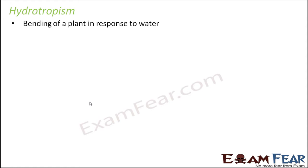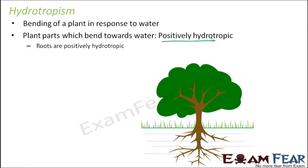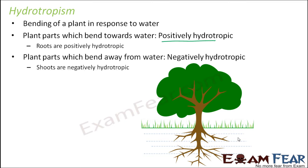Third is hydrotropism — bending of a plant in response to water. Plant parts that bend towards water are positively hydrotropic. For example, roots grow towards water in the soil, so they are positively hydrotropic. Shoots grow away from water, so they are negatively hydrotropic. You cannot dip shoots into water; they will not be able to grow, so they tend to stay away from water.